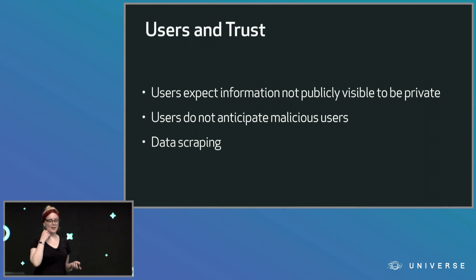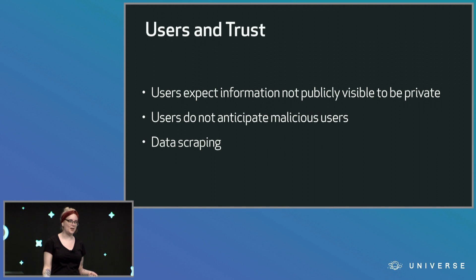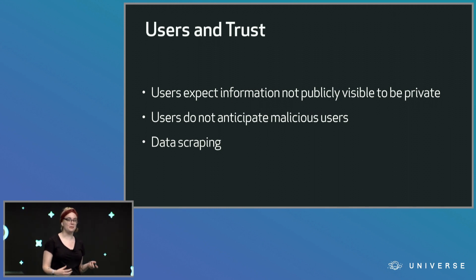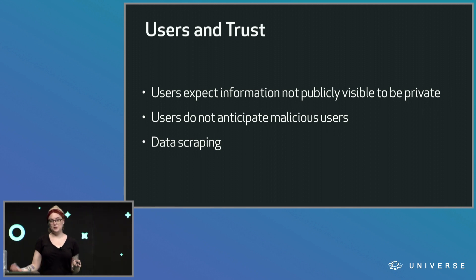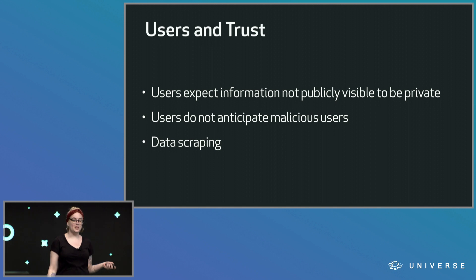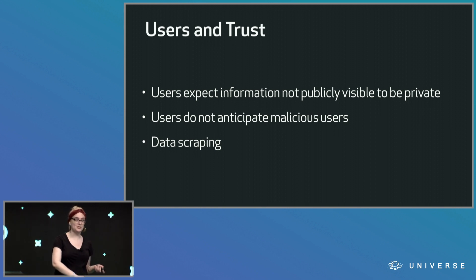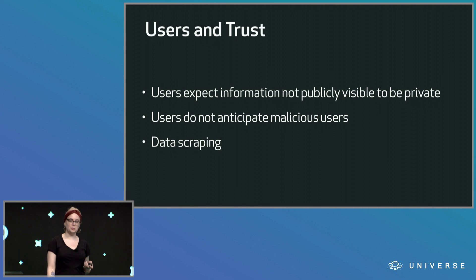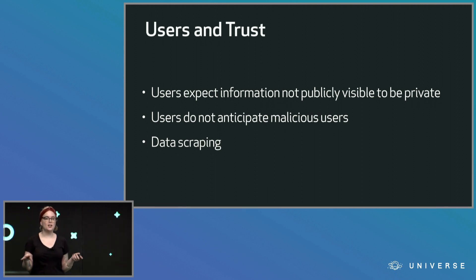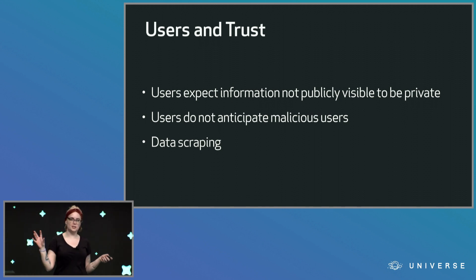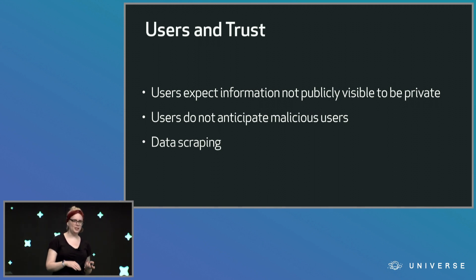Users and trust are a funny thing. I'm sure many of us have seen big stories recently about users who gave companies information, trusted it to remain private, and then it ended up becoming leaked or visible by some other means. When users give you that information, they don't anticipate it being used maliciously against them — unless they've had prior experience of that happening, which some people have, and that's really unfortunate. Data scraping is another weird thing that's always happening on the web — there are always bots crawling, pulling down all sorts of information.